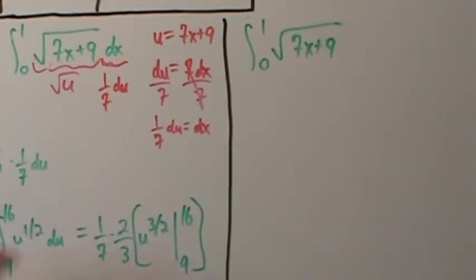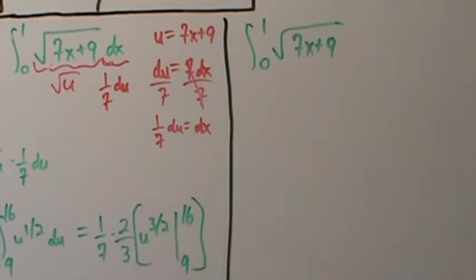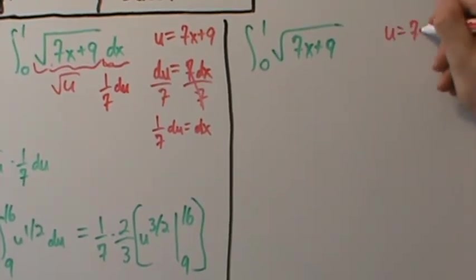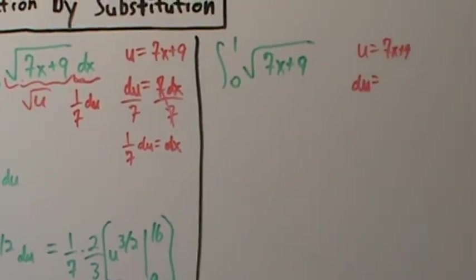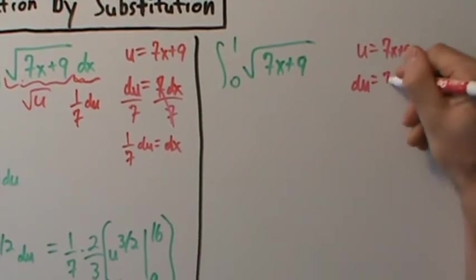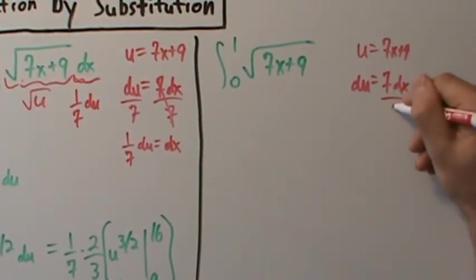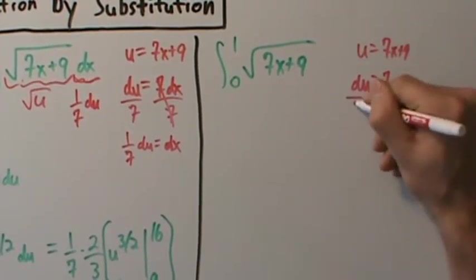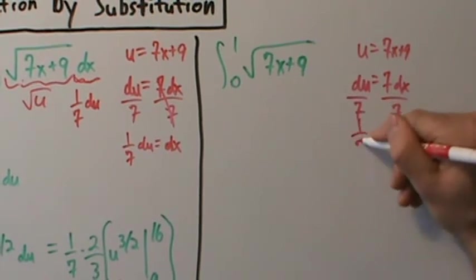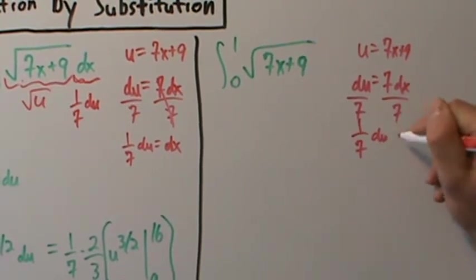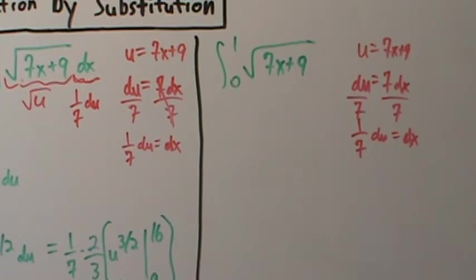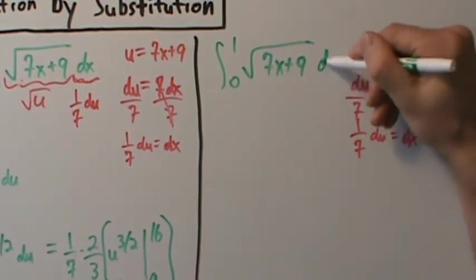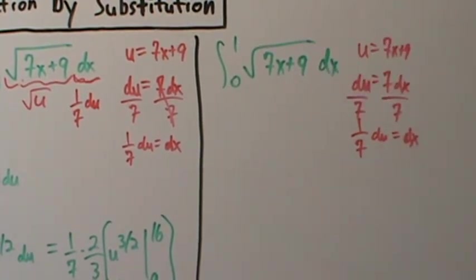Making the same substitution, we get the integral of the square root of u times (1/7) du. Always make sure to include the dx — I momentarily forgot it here, which is very bad; you must always put it in.